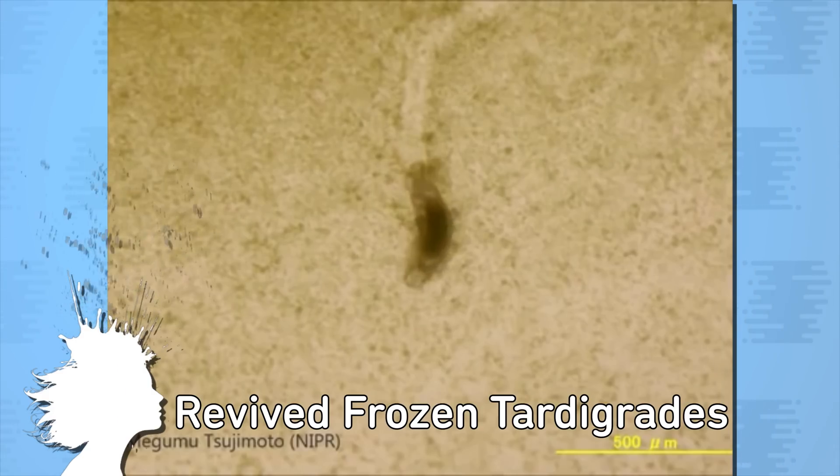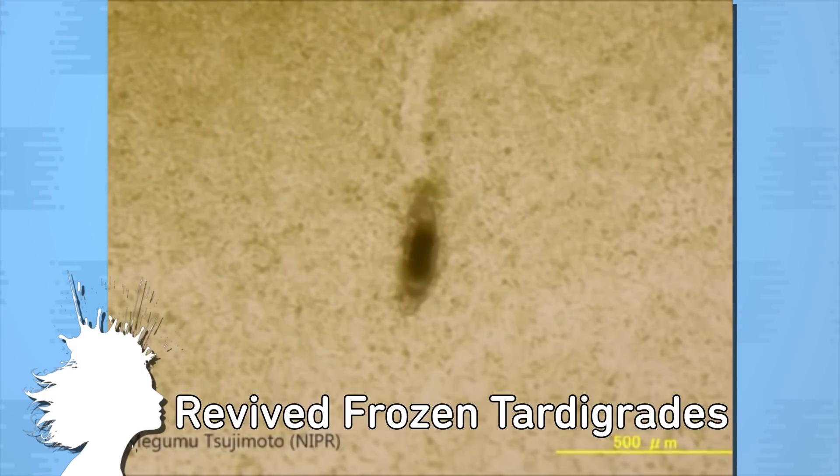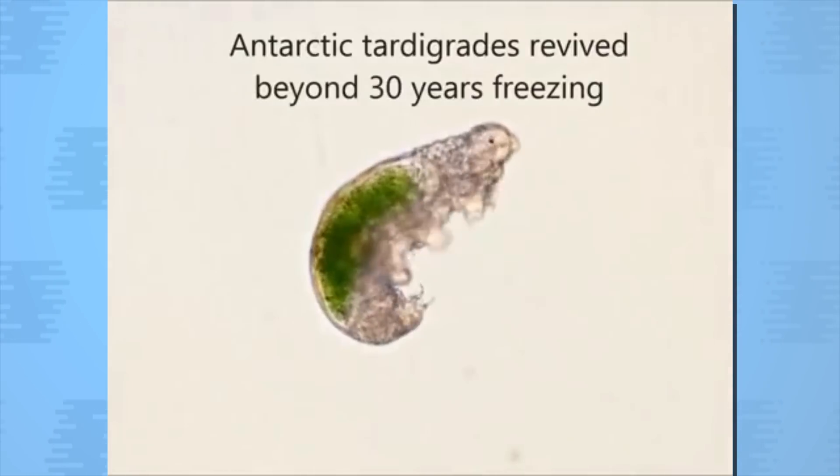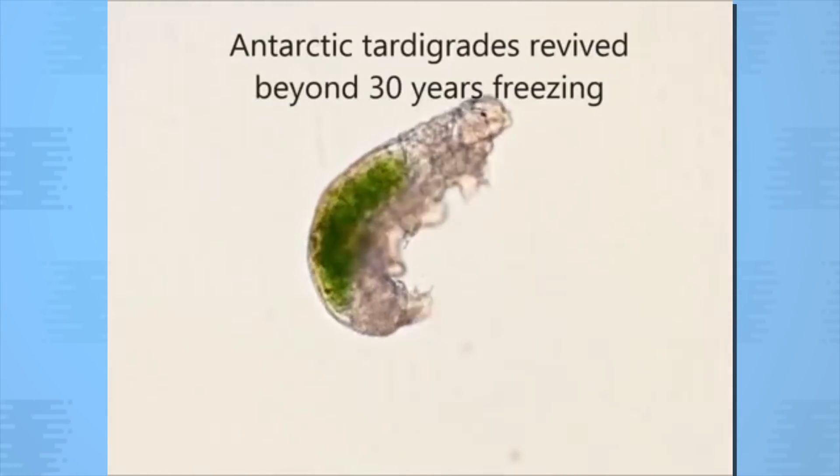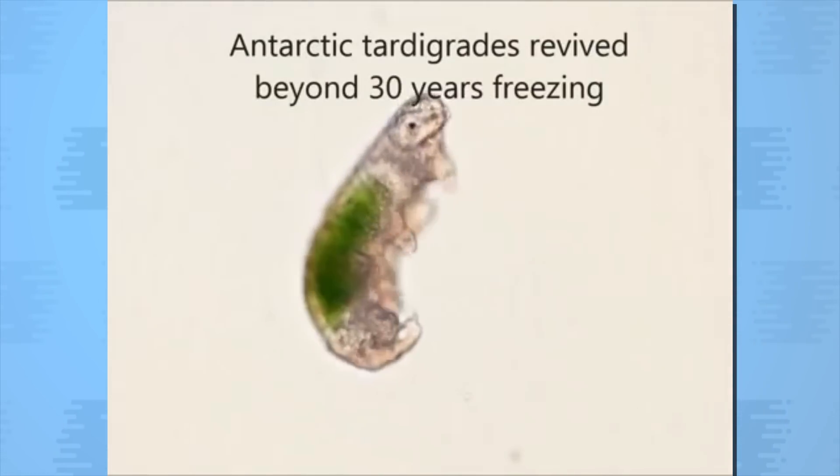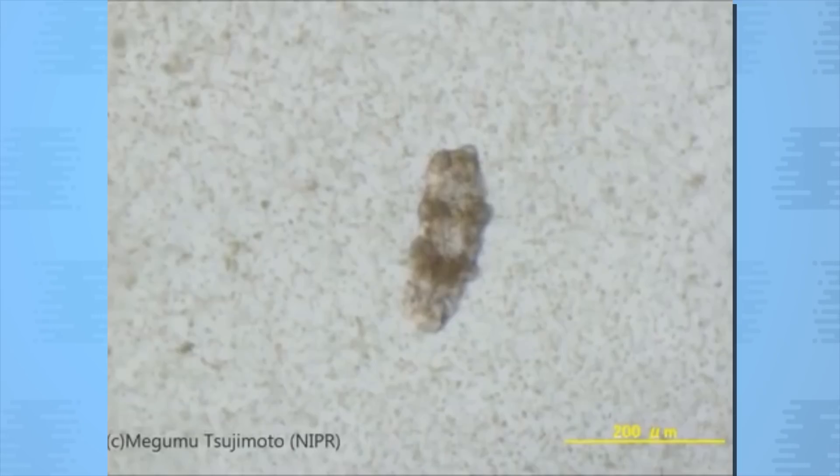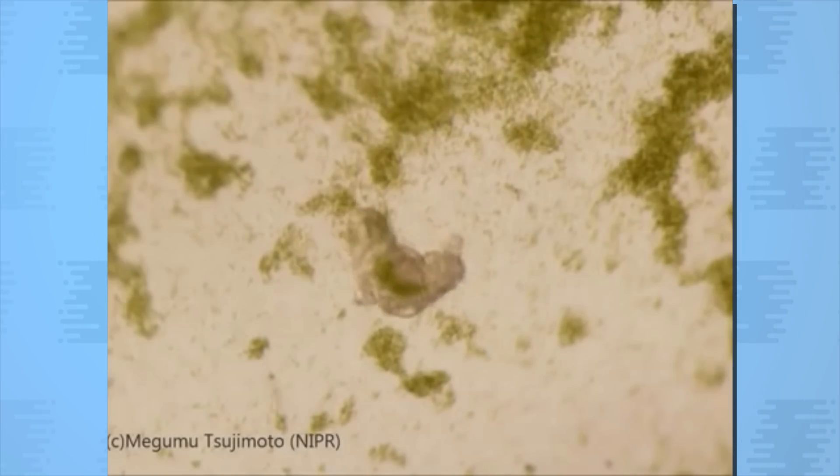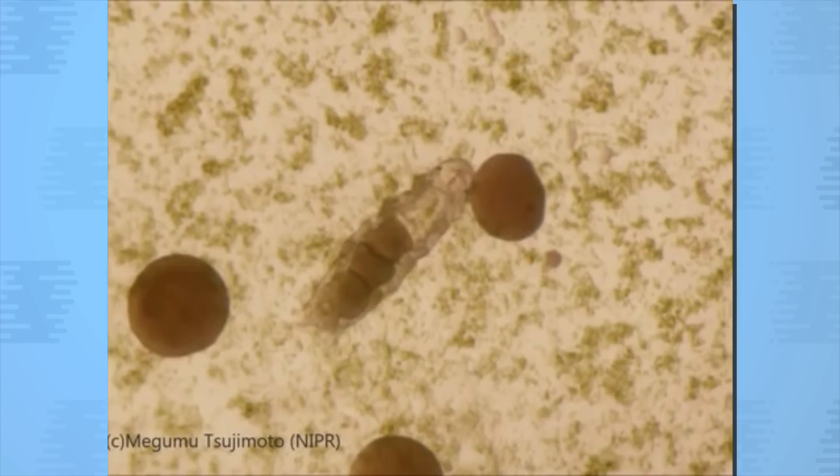Scientists from the National Institute of Polar Research revived Antarctic tardigrades frozen for over 30 years. Taken from frozen moss in 1983 and stored at minus 20 degrees, the samples were recently defrosted. The tardigrades essentially woke up from suspended animation, ate some algae and went on to successfully reproduce.